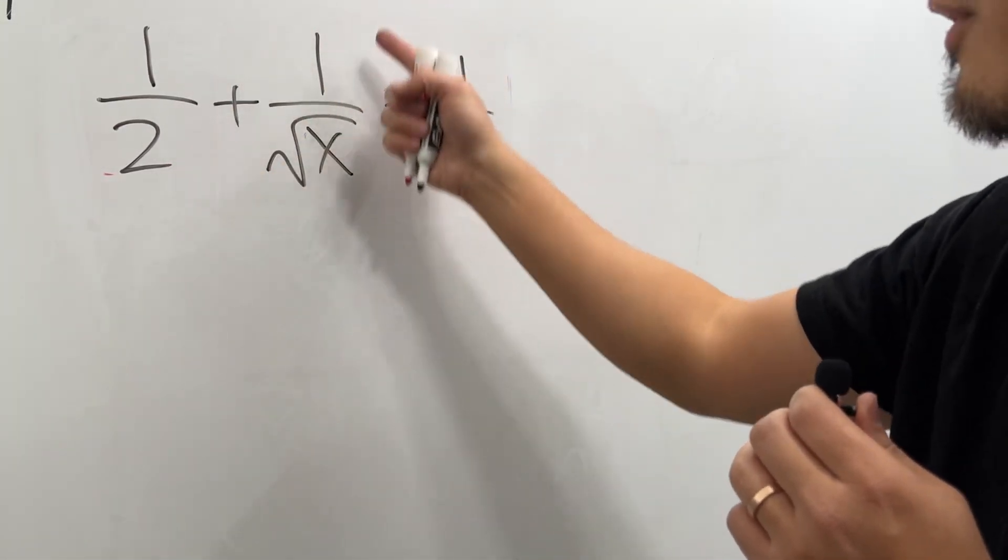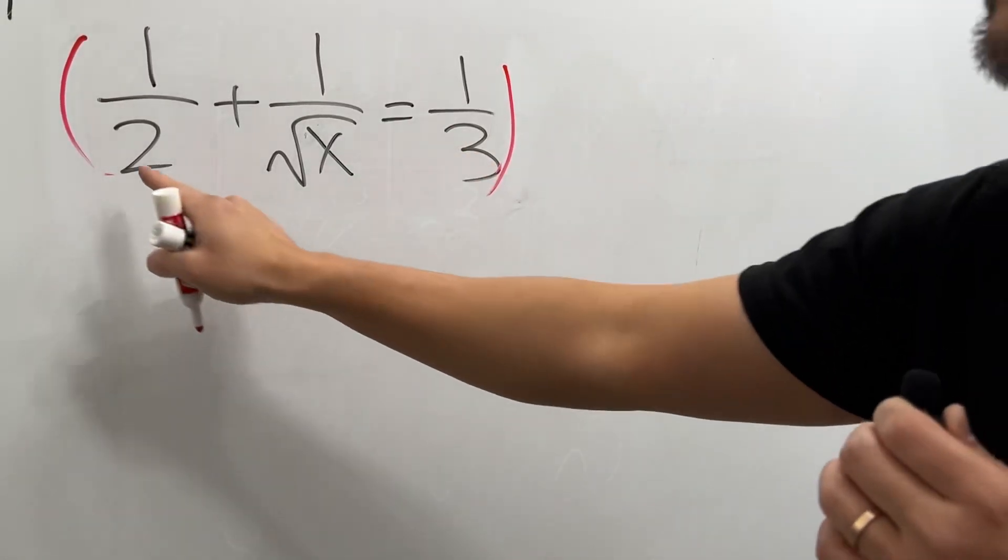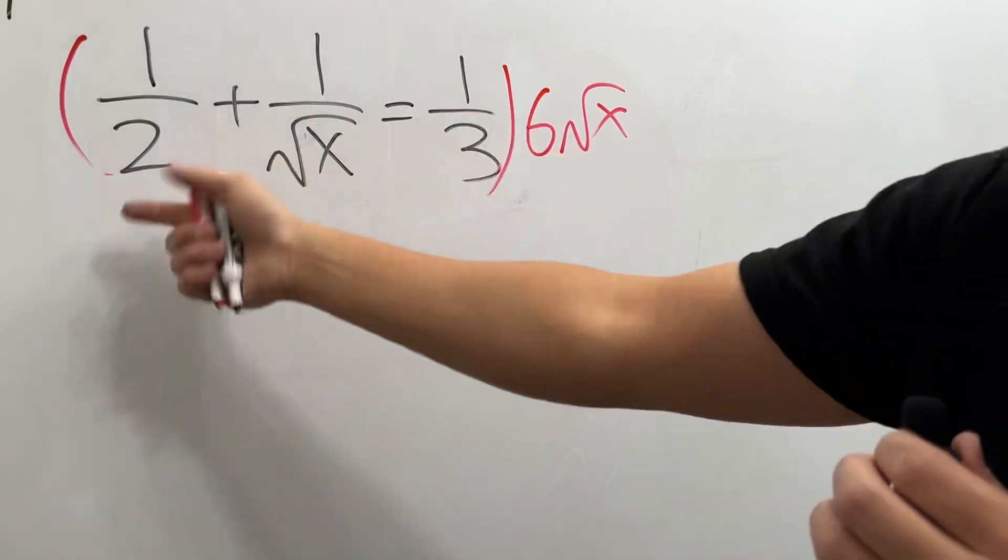How do we solve an equation like this? One half plus one over square root of x is equal to one over three. Well, one way to do this is multiply everybody by its lowest common denominator: two times three is six, and then times that, which is six square root of x.